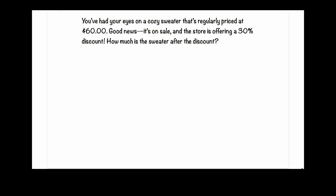I'm going to solve this in two ways. In our first way, the sweater is sixty dollars and we're going to subtract the discount to get our new price. The discount is thirty percent, so we take thirty percent multiplied by sixty dollars. Thirty percent is written as 0.3, and this equals — we take 3 times 60, which is 180, and because we move the decimal one space, we also move the decimal to the left, giving us eighteen dollars.